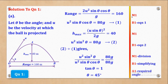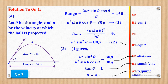Looking at the mark allocation: M1 is for the substitution and B1 is for equation 1. M1 is for the substitution and B1 is for equation 2. Then M1 is for the division, B1 for simplifying, and A1 is for the required angle.